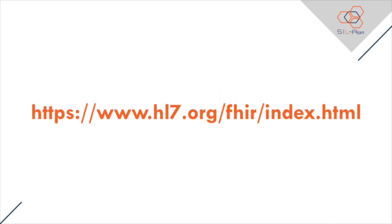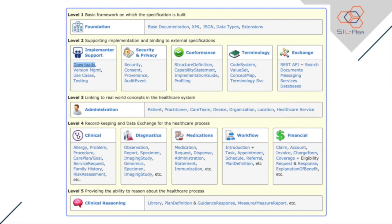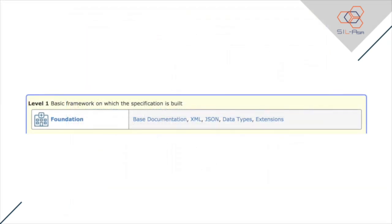When we visit the FHIR specification — which can be found at www.hl7.org/fhir/index.html — we will see parts of FHIR grouped into the similarities of their functions. Level 1 is the Basic Framework on which the specification is built. You'll see general information you need to know before you get started, including the underlying technologies. Level 2 is Supporting Implementation and Binding to External Specifications. In this level you can find the guides for implementers, from downloads, test cases, security, conformance, and terminology services to exchanging messages.